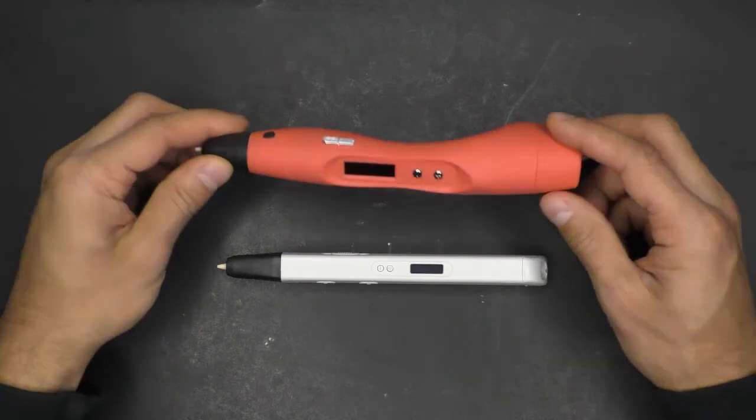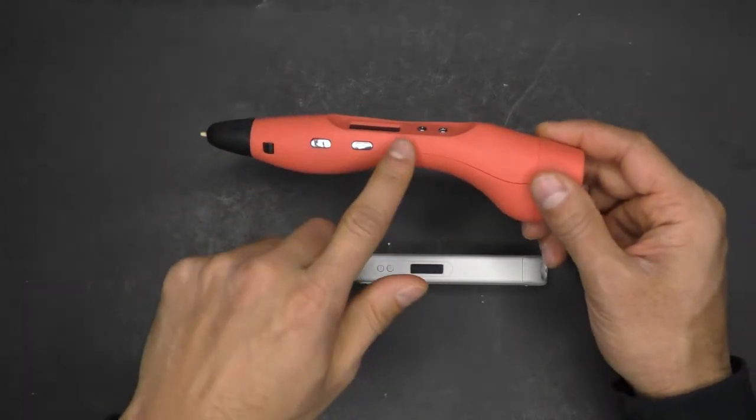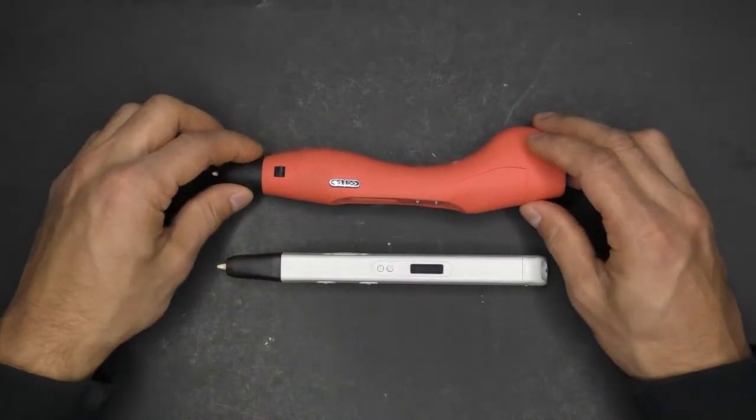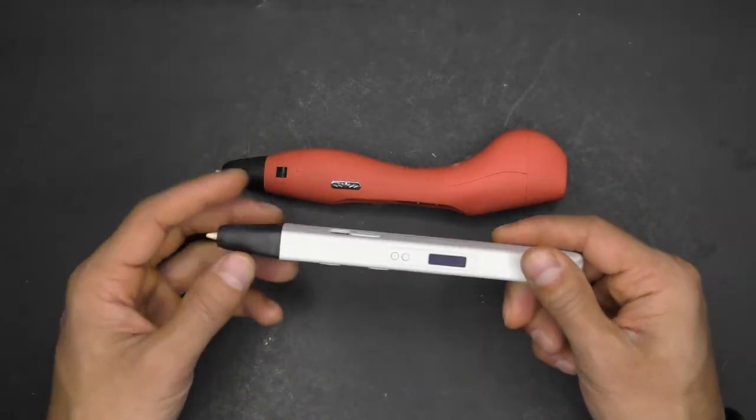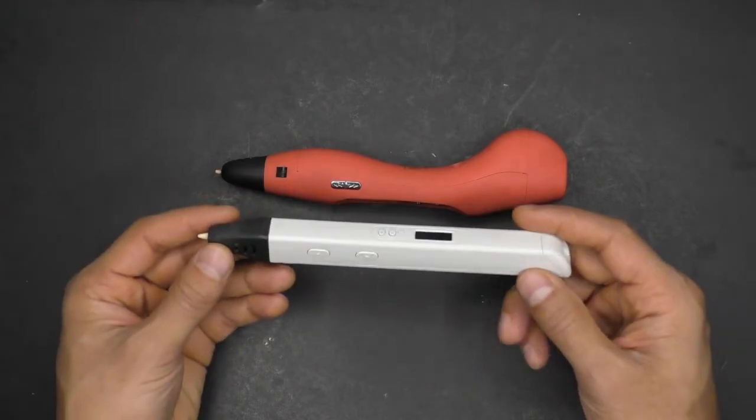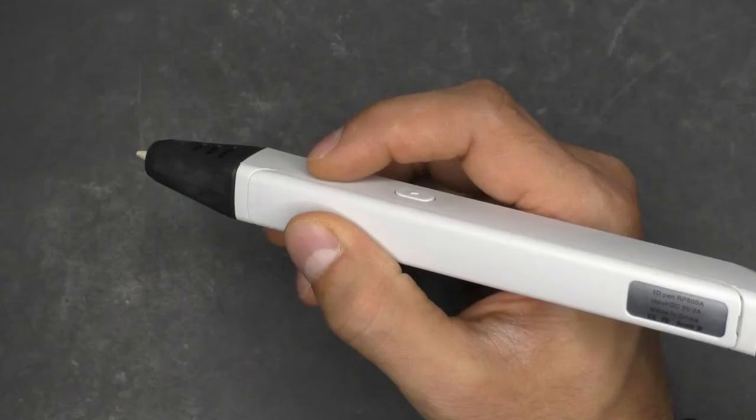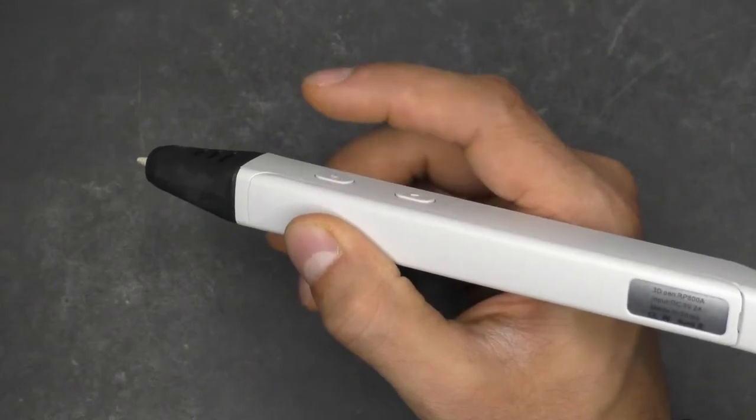This tip may seem very obvious, but learning how the specific pen that you own performs while bridging is very helpful. Different pens have different speed settings and retraction rates. These all have an impact on the bridging lines that you'll end up making. So when to release the extrude button will be very different for different pens.